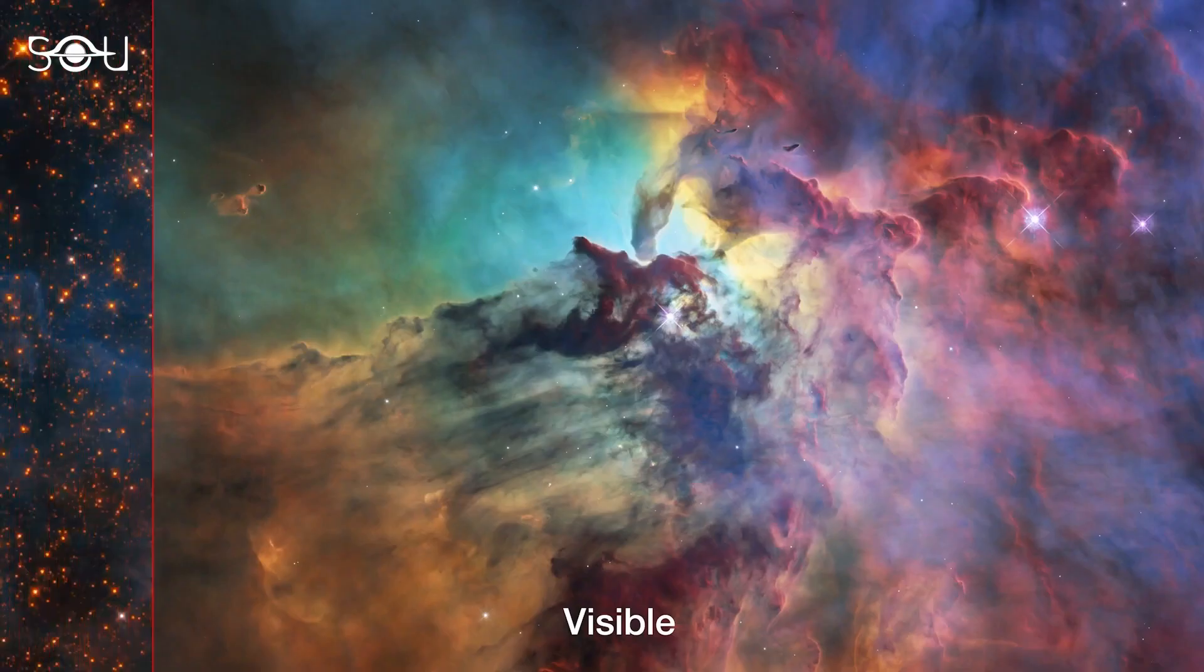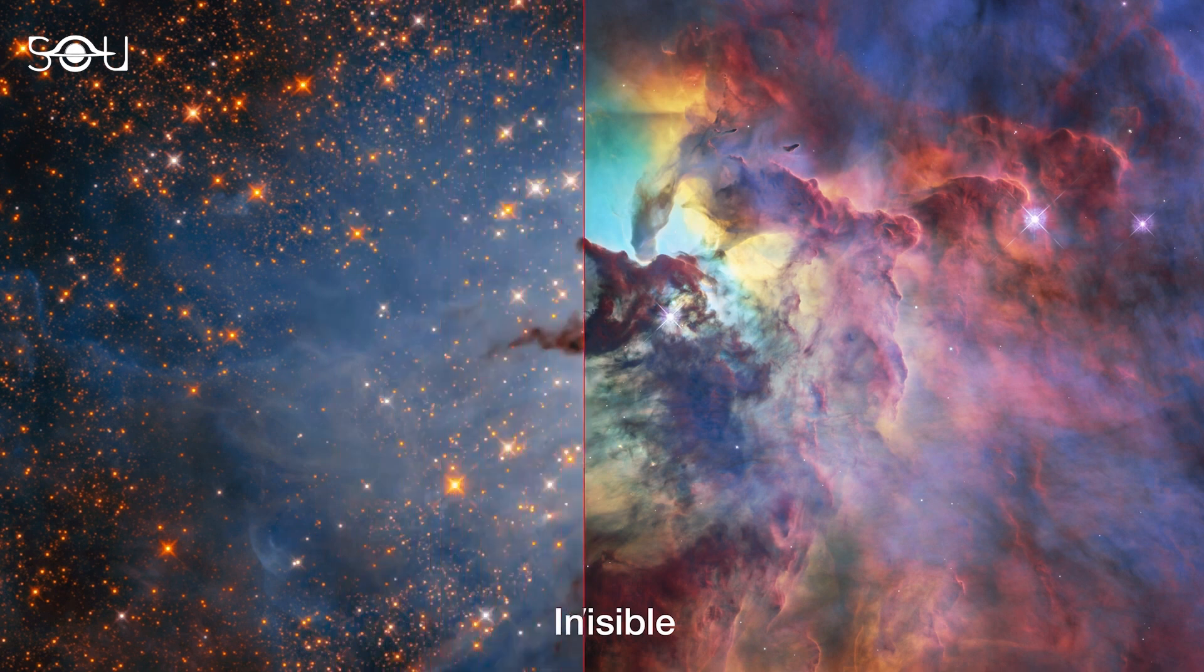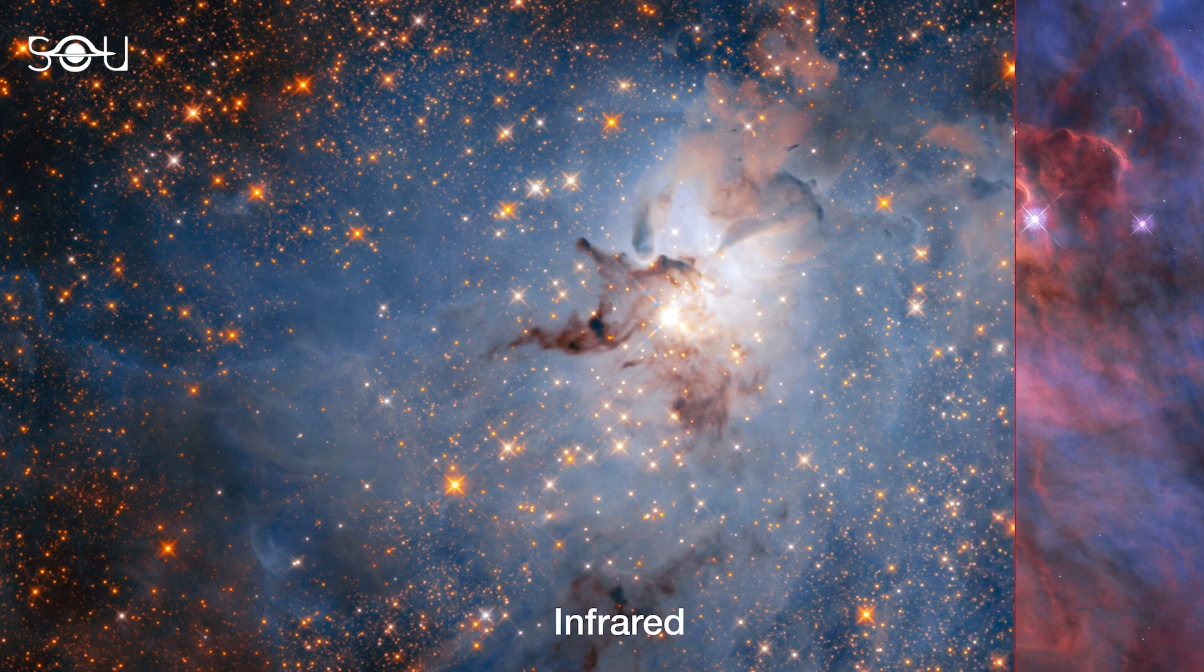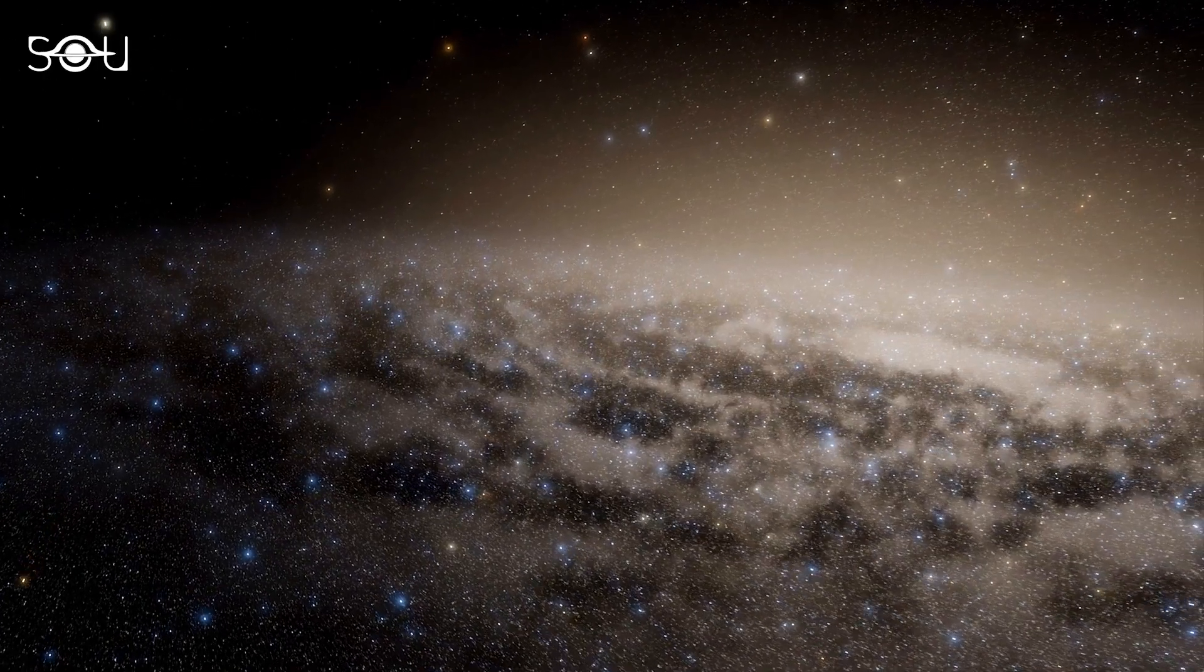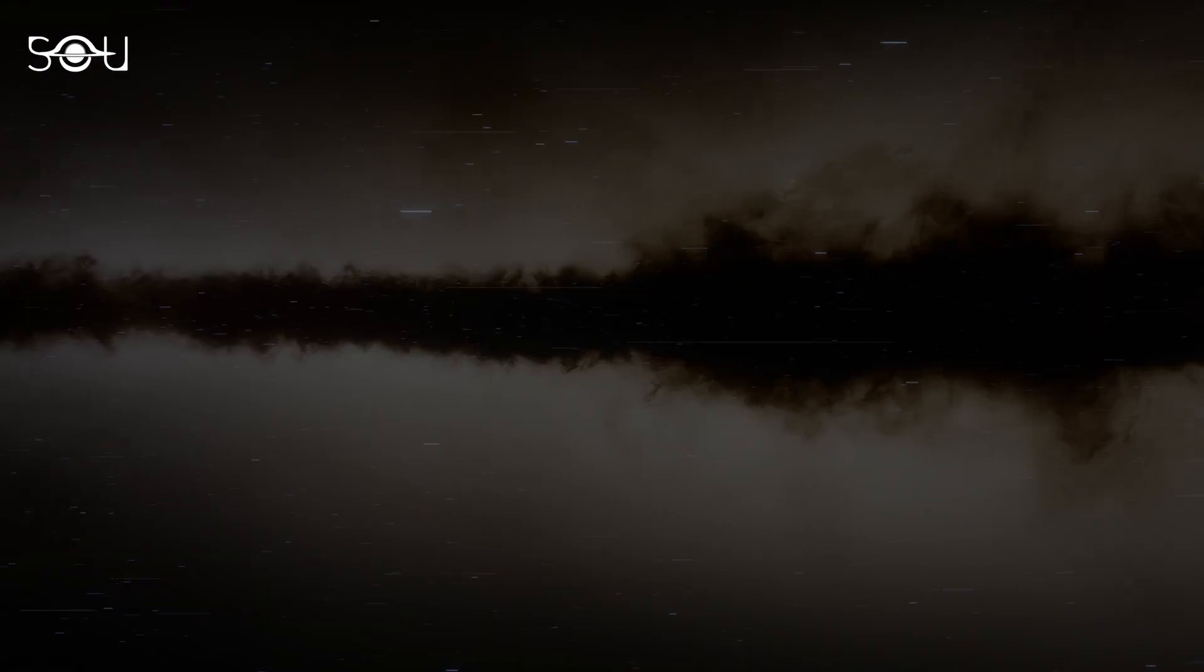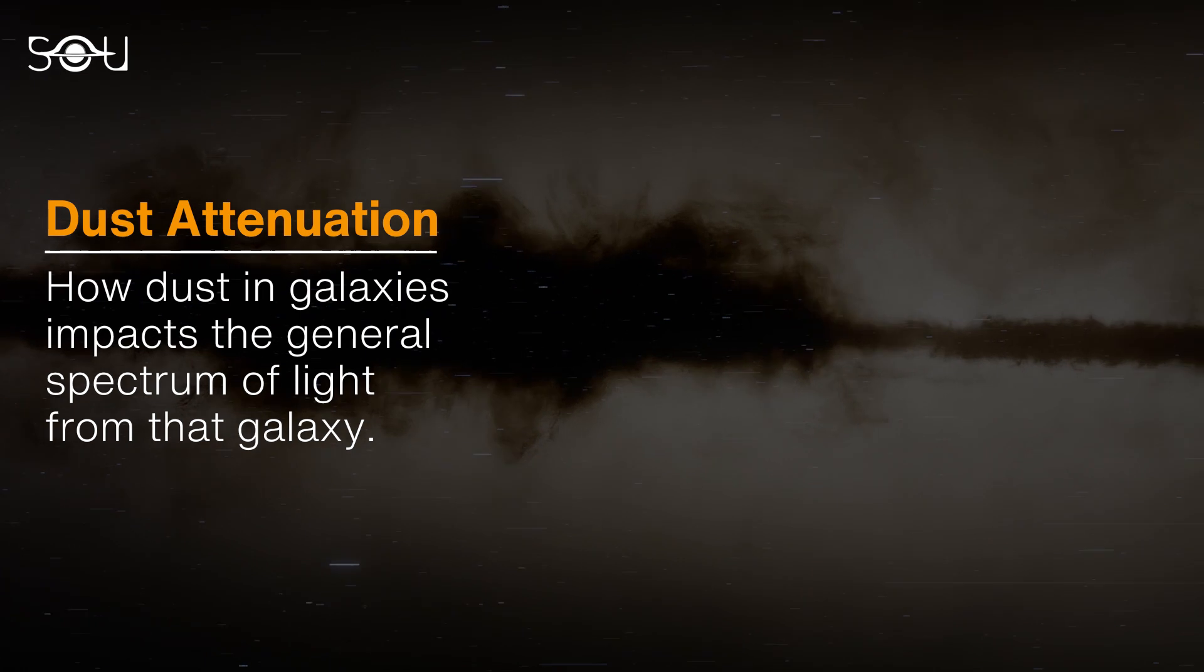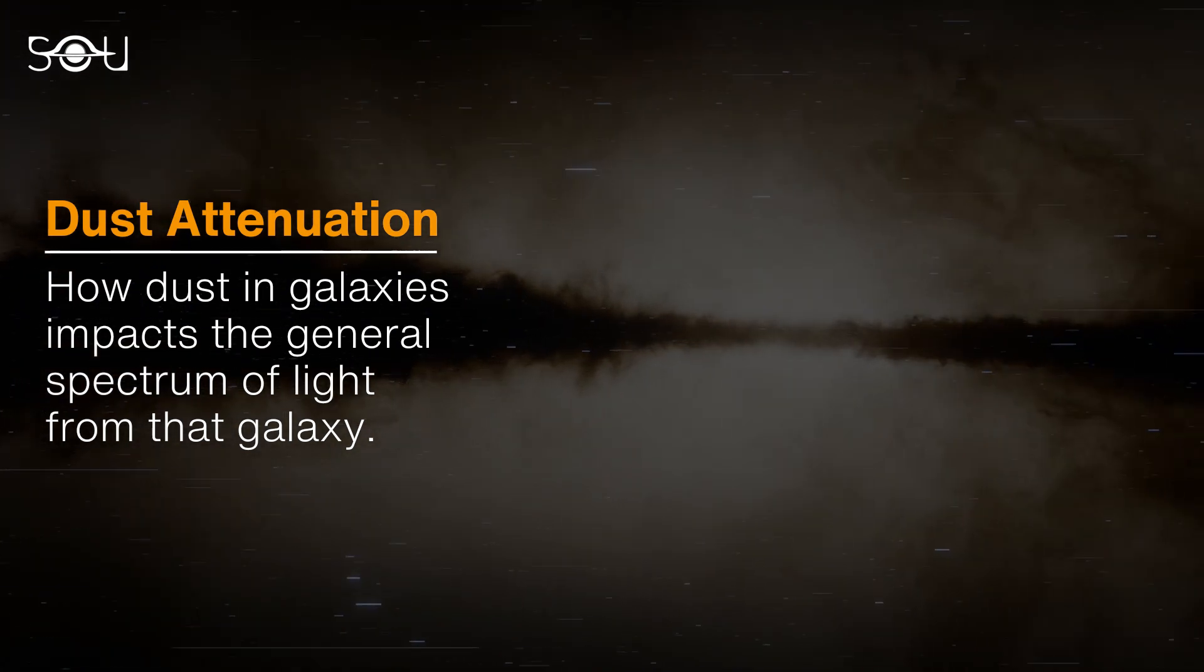The dust converts the stolen starlight it absorbs into light at longer wavelengths, which astronomers can study in the mid-infrared range of the EM spectrum. Although dust forms a tiny fraction of the galaxy's overall mass, its impact on the observations of galaxies is striking. So we have to consider dust attenuation to accurately determine the brightness of the galaxy, its stellar population, and the UV continuum slope.